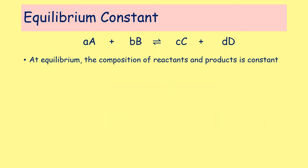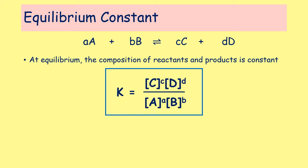Because once you reach equilibrium you have constant concentrations of all the chemicals involved, it allows you to use those concentrations as a way of defining equilibrium. We define the equilibrium by something called the equilibrium constant, given the letter K. For the reaction shown, we have two reactants A and B with stoichiometry given by the small letters a and b, in equilibrium with two products C and D with small c and d representing their stoichiometry. This expression, which is given to you in the data booklet, allows you to always define the equilibrium constant.